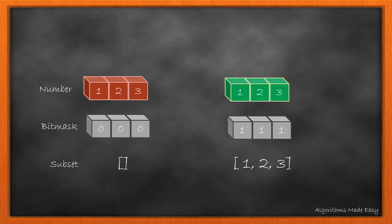For numbers 1 to 3, the bitmask will be of length 3, and all 0s will denote an empty subset, while all 1s will denote a subset with all the values filled.